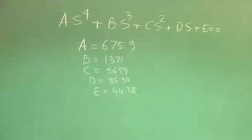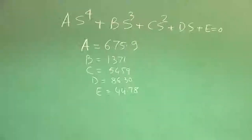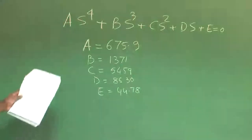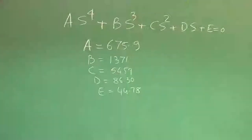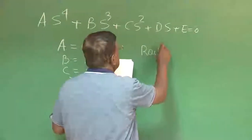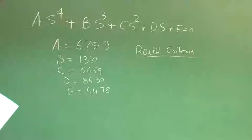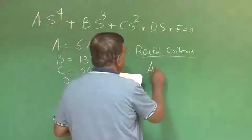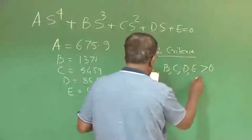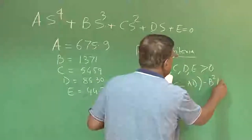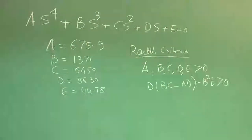To quickly check whether this longitudinal dynamics has all stable roots or not, we must understand that because of s⁴ we expect 4 roots. The Routh criteria conditions are: A, B, C, D, E should all be greater than 0, and D·(B·C - A·D) - B²·E > 0. If these two conditions are satisfied, then the longitudinal dynamics has all stable roots.